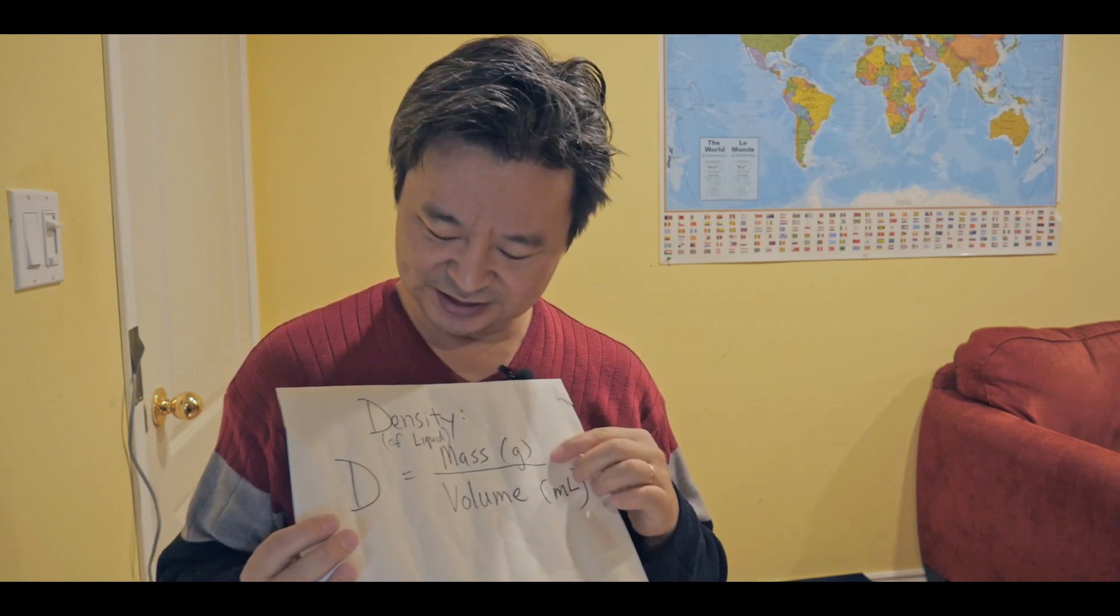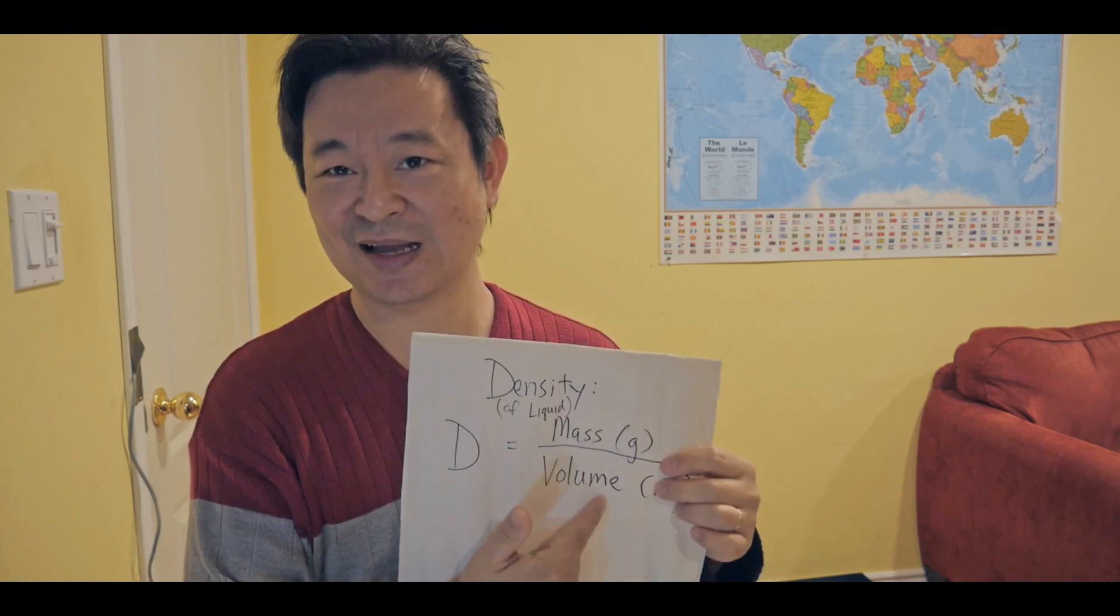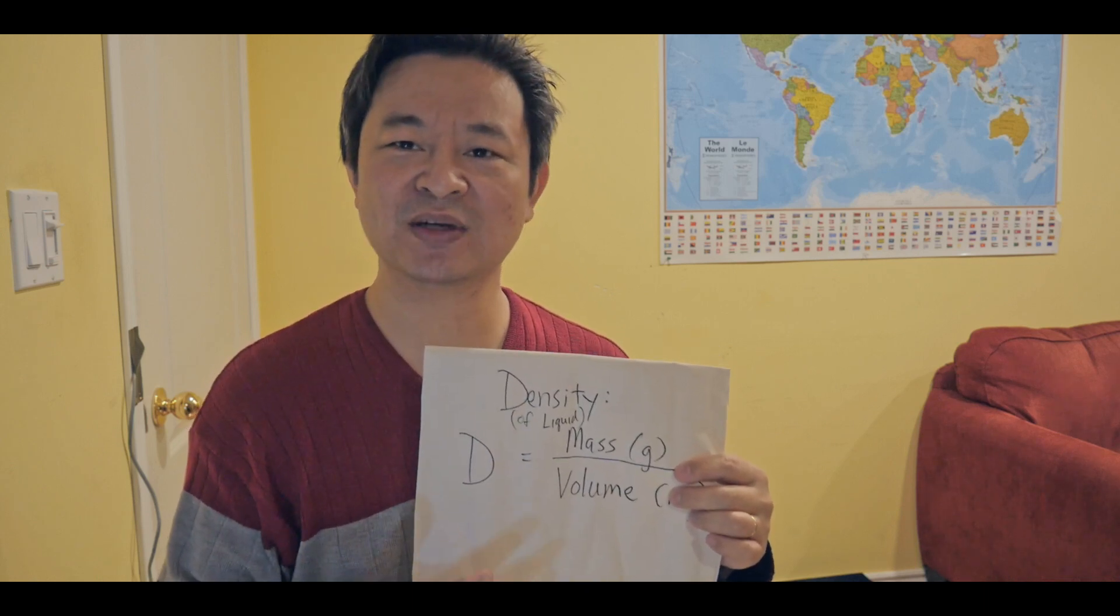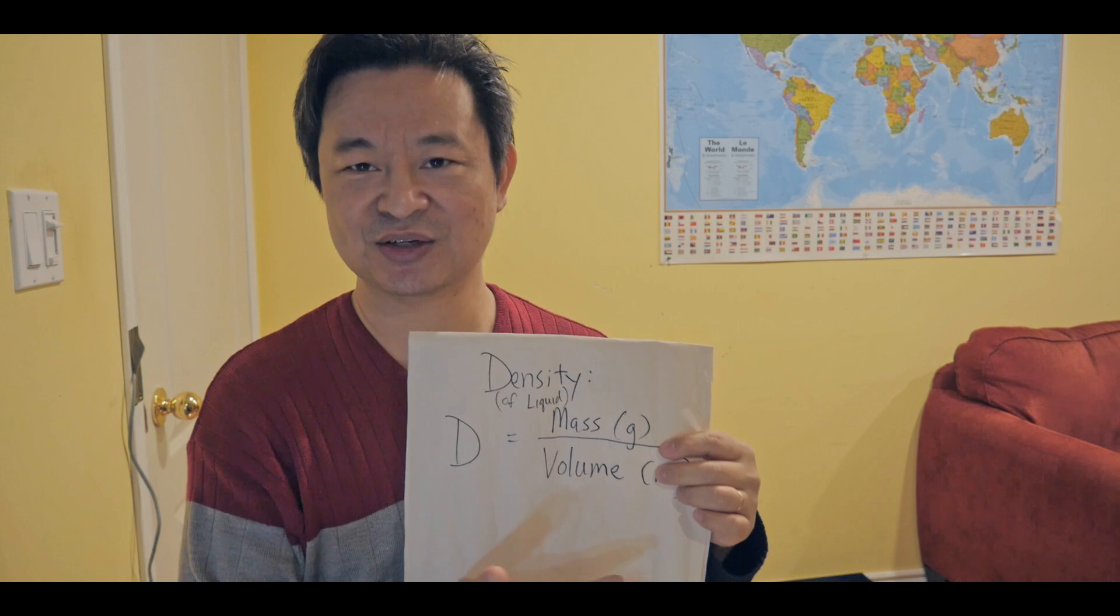Alright, before we get started, I just want to remind you the formula for density, which is mass in grams over volume. Now, since we're dealing with liquid density, it's going to be milliliters. So that's the density formula.